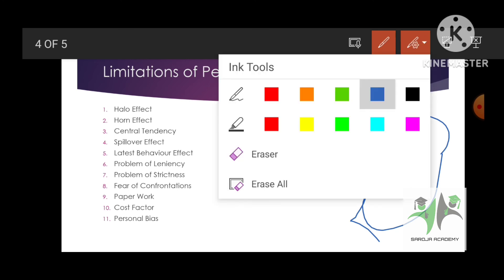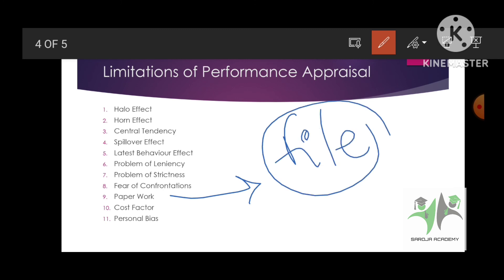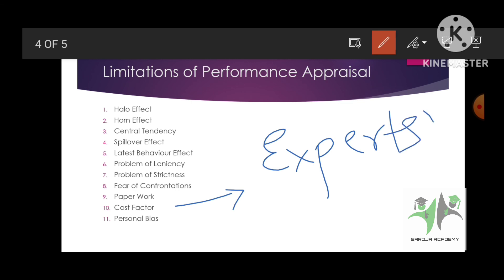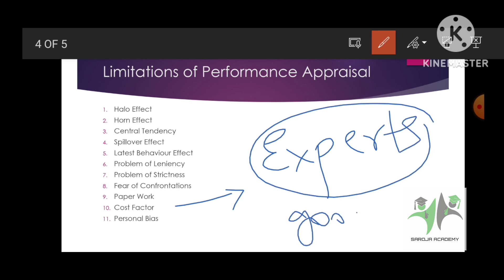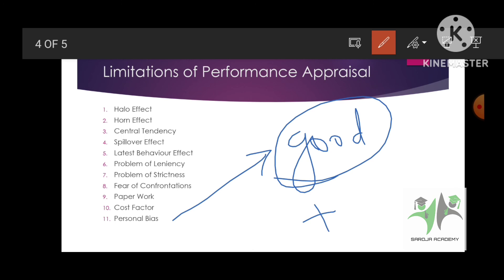Next is paperwork — whatever performance appraisal is done is only for file work. If you are hiring some experts for this work, experts ko hume good amount pay karna padega, so this is one limitation as well. And the last point is personal bias — samjho mera kuch achha relation ek person ke saath hai, then I'll give good scores; if I am having bad relation then I may give him low scores.